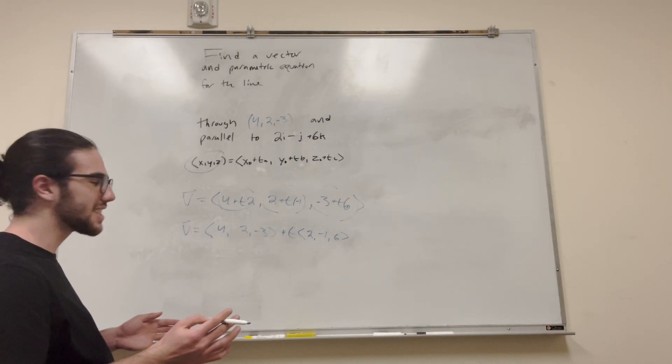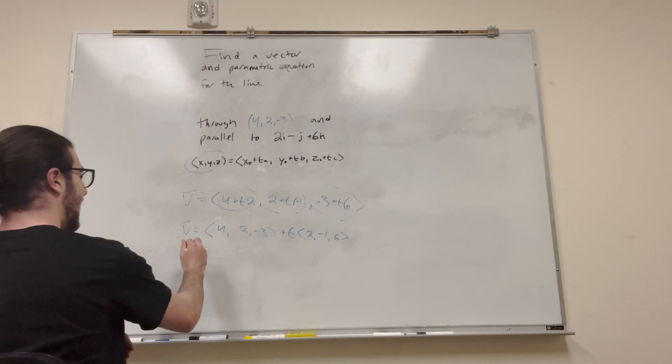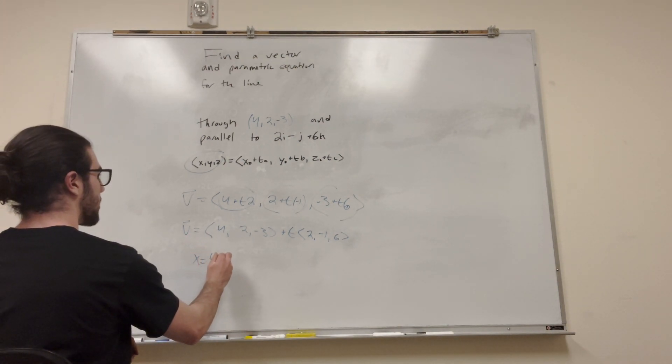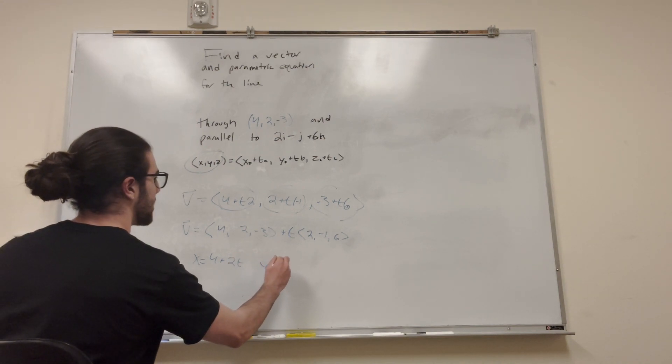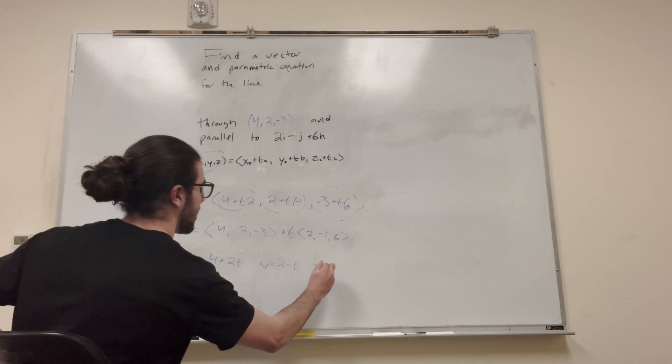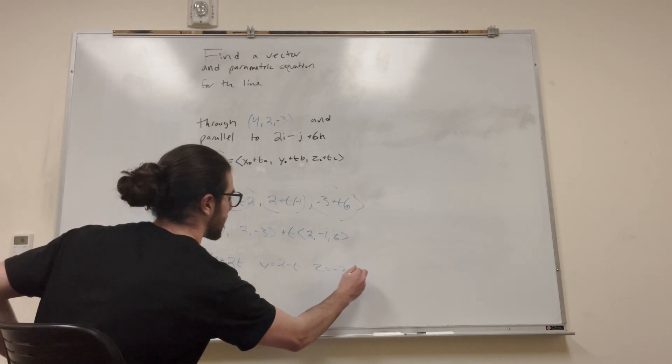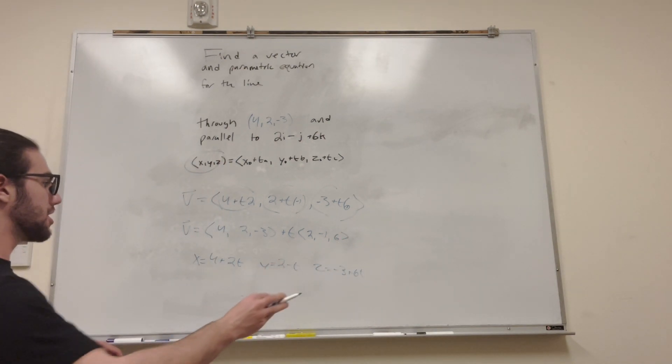Well, I just spoke the answer. Let's just put it down. X is equal to 4 plus 2T. Y is equal to 2 minus T. And Z is equal to negative 3 plus 6T. That is our parametric form right there.